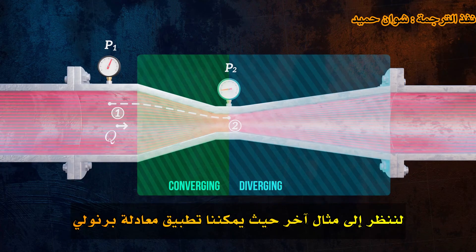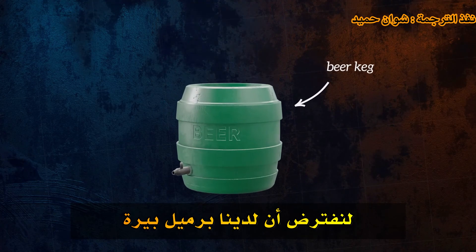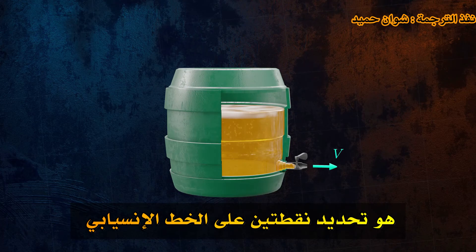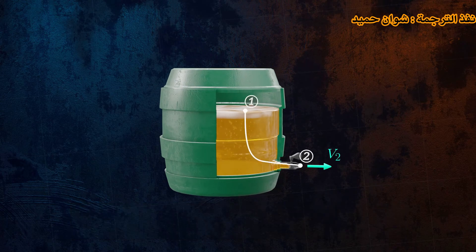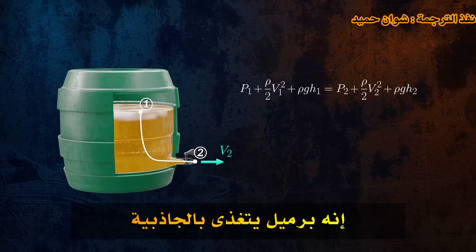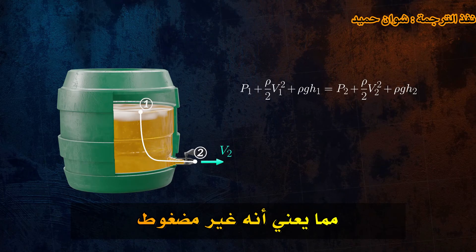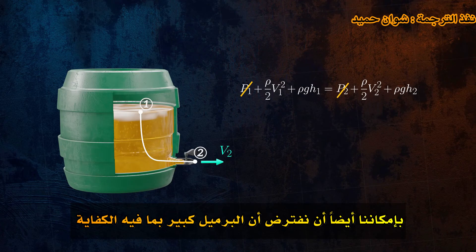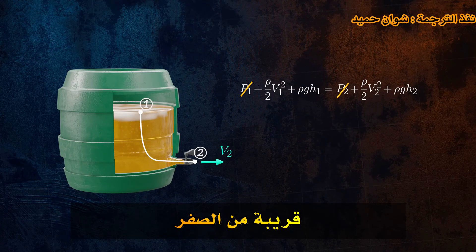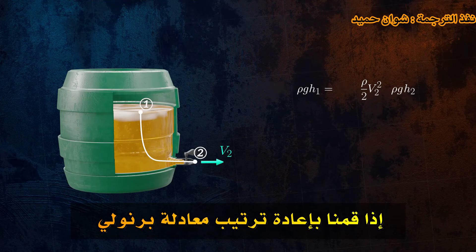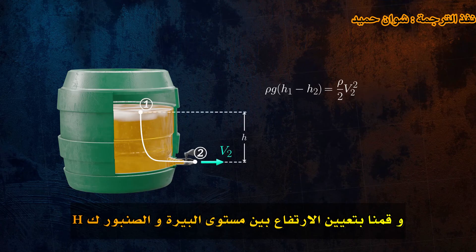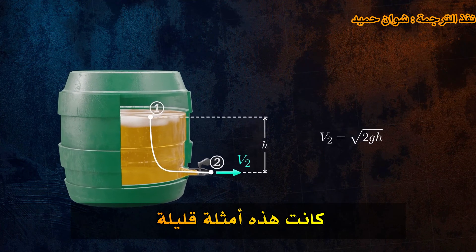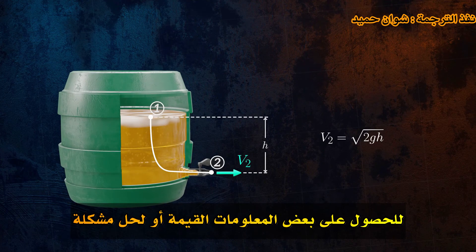Let's look at one more example where we can apply Bernoulli's equation. Say we have a beer keg, and we want to calculate how fast beer will drain when we first open the tap at the bottom. All we need to do is define our two points along a streamline and apply Bernoulli's equation. It's a gravity-fed keg with a vent at the top, meaning that it's not pressurized. The pressure at both points will be atmospheric, and so the static pressure terms cancel each other out. We can also assume that the keg is large enough that the fluid velocity at point 1 is close to zero. If we rearrange Bernoulli's equation and define the height between the beer level and the tap as h, we get this equation for the beer velocity out of the tap.